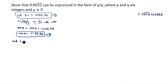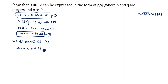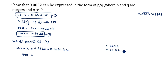Subtract equation 1 from equation 2, going from biggest to smallest. So 100x minus x: the right-hand side is 0.3232 minus 0.003232. Performing the subtraction digit by digit: 100 minus 1 gives 99x on the left side.